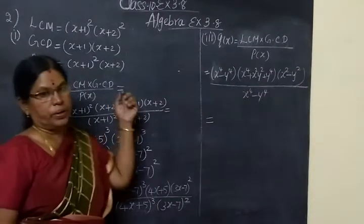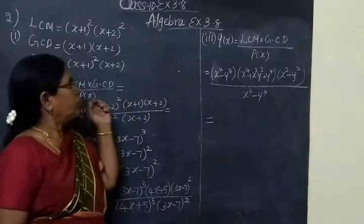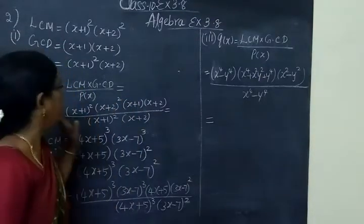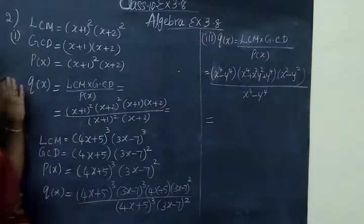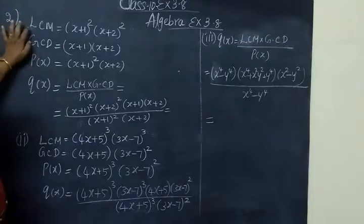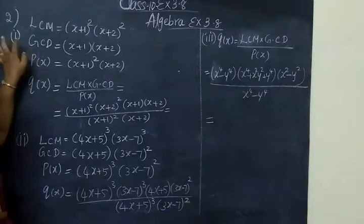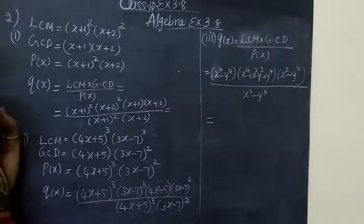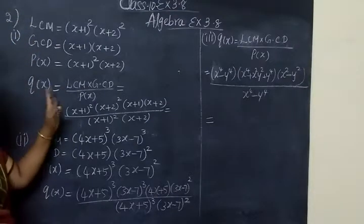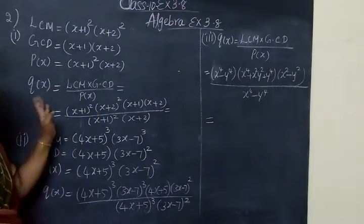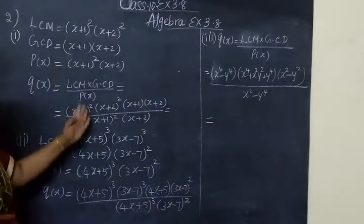Next we are seeing 2 more questions from the same exercise 3.8. LCM is given, GCD is given, P of X is given — these are the parameters for the formula: Q of X equals LCM times GCD divided by P of X.